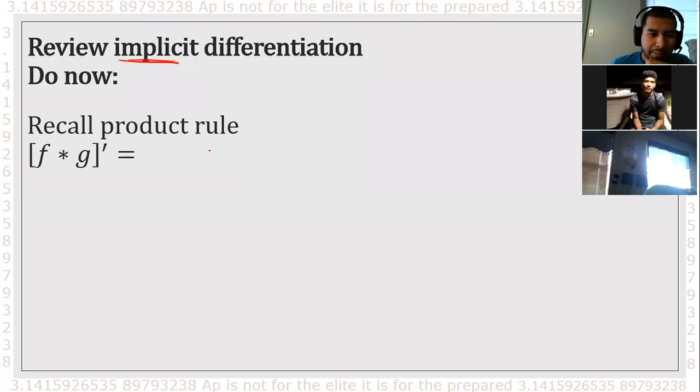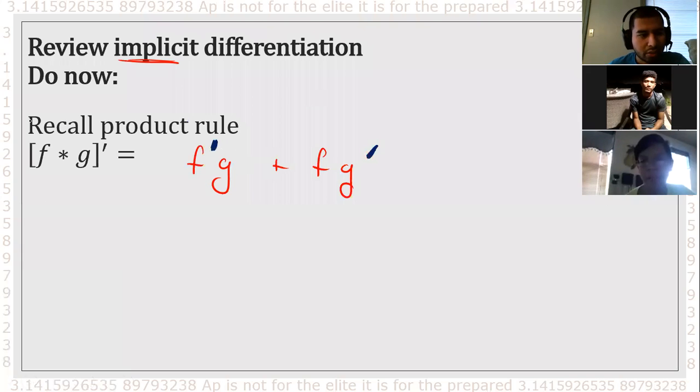So pretty much it's the product rule that tells us we're going to add f'g plus fg'. Something happens when we derive these - when we derive them we have to derive the front and derive the back, and f and g are different functions. Just a little review about the product rule.